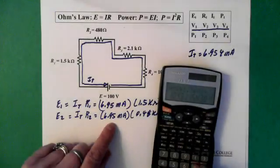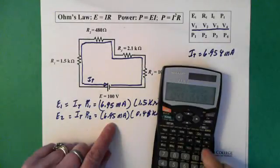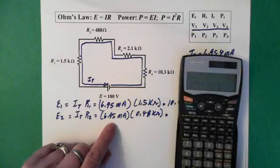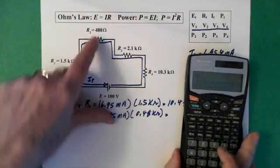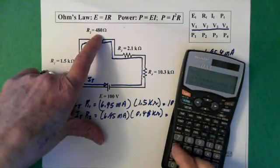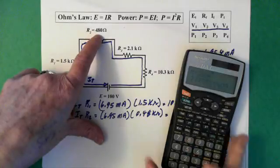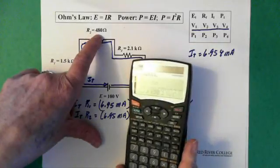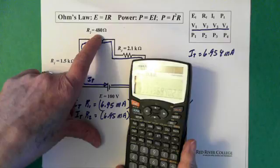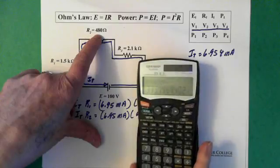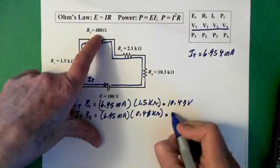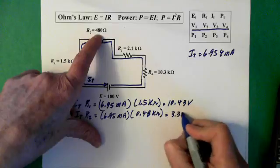So let's grab our current again. We recall memory, there's our current, multiplied by 480 equals, and we end up with 3.34 volts.